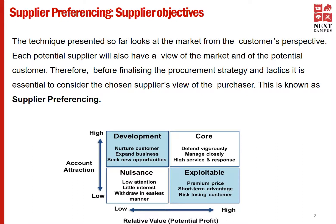Let us look at the box on the bottom left-hand corner — an area that a supplier would not like to be in. For this set of customers, the attraction is low as well as the potential profit. So from a supplier's perspective, investing in these customers would not generate much value.